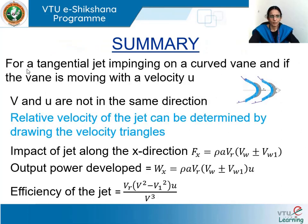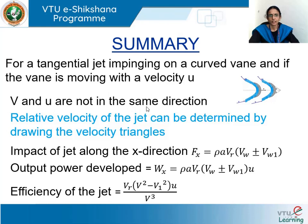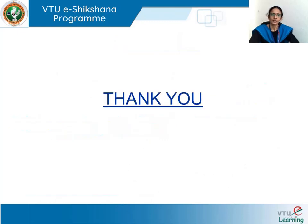To summarize: if a tangential jet impinges on a curved vane moving with velocity u such that u and v are not in the same direction, the relative velocity with which the jet strikes the vane is determined using velocity triangles. With this relative velocity, we derive expressions for the impact of the jet, the work done per unit time, and the efficiency of the jet. We will continue this discussion in the next lecture. Thank you.